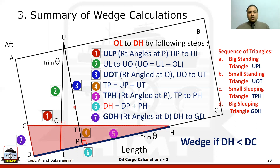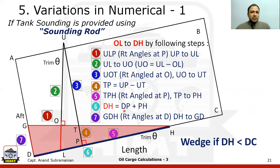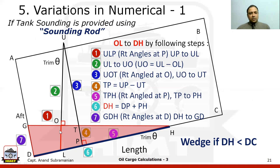This covers all the calculations about wedge calculations from GD and DH to find out the volume of the oil or the wedge. There are some variations in this whole process depending on the kind of value given. The base problem is if the tank sounding is given using a sounding rod — that means OL is given — and we have to go all the way from step 1 through step 7.